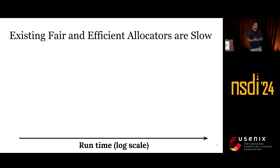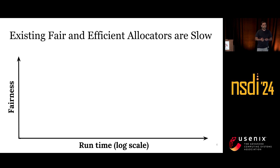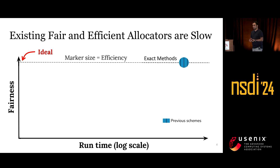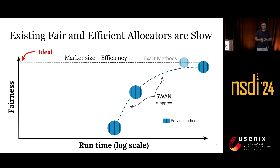Unfortunately, existing fair and efficient allocators are quite slow and don't meet our time requirements. Here the x-axis is runtime on a logarithmic scale, the y-axis is some measure of fairness, and the marker sizes are proportional to efficiency. Ideally, we want to find the fairest solution as fast as possible. The first group of techniques go for exact fairness — they find the fairest solution but end up being extremely slow. The second group allow for approximately fair solutions, trading fairness for speed, but even these faster approximate solutions are slow and don't meet our time requirements.